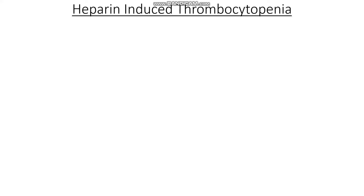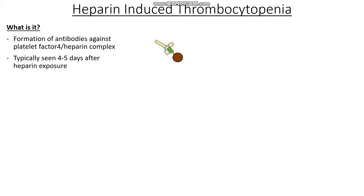However, in heparin-induced thrombocytopenia, the heparin molecule does something odd and binds onto platelet factor 4. After this binding, we get the development of antibodies against the heparin and platelet factor 4 complex. This usually occurs about 4 to 5 days after heparin exposure, because we need time for our antibodies to develop against what is perceived to be a new threat.